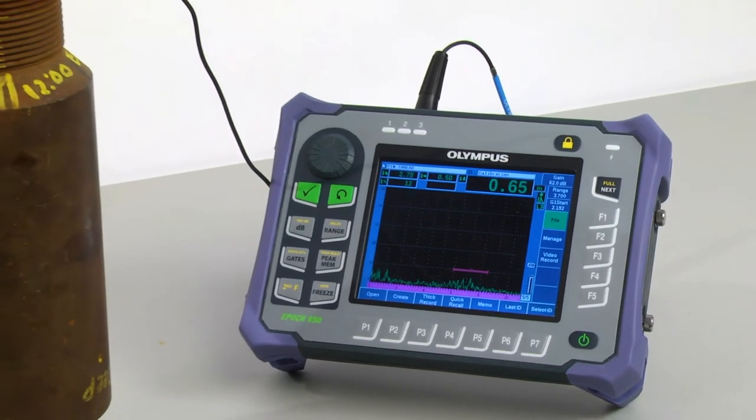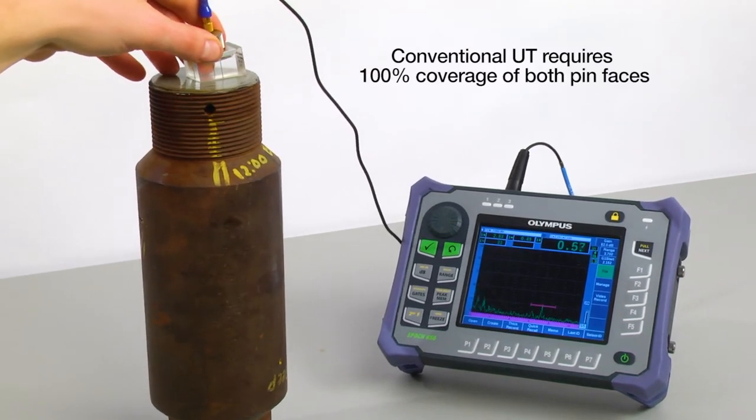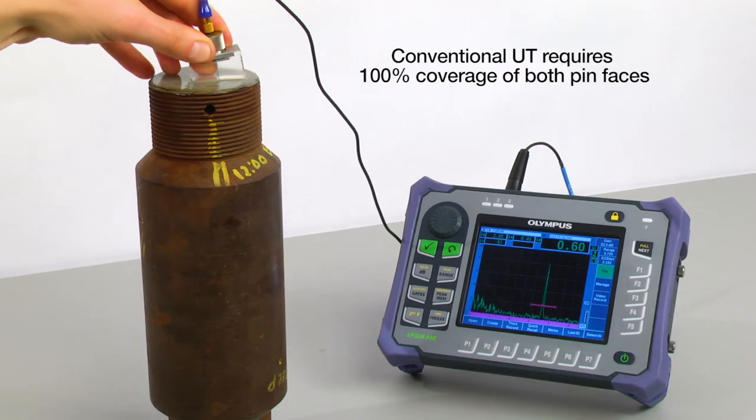Inspecting a hanger pin with an EPIC 650 ultrasonic flaw detector requires 100% coverage of both pin faces to help ensure coverage of critical defect locations.